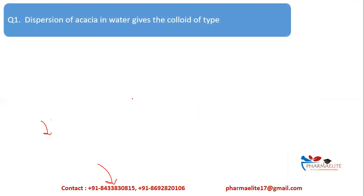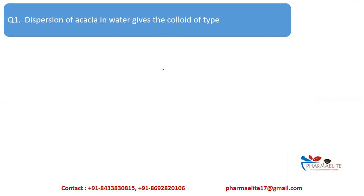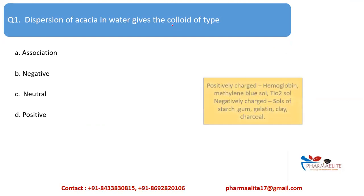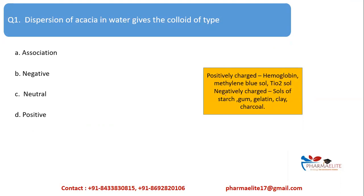Now let's solve some MCQs on colloids. The dispersion of acacia in water gives a colloid of which type — association, negative, neutral, or positive? Positive colloid examples include hemoglobin, methylene blue, and titanium oxide. Negative colloid examples include starch, gum, clay, gelatin, and charcoal. Acacia falls in the category of gums, so the answer is negative colloid.